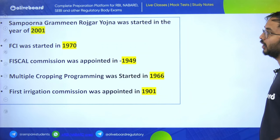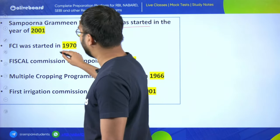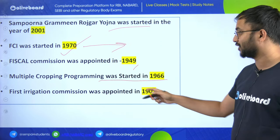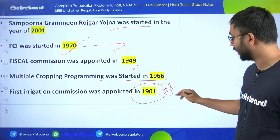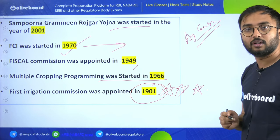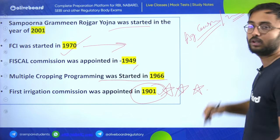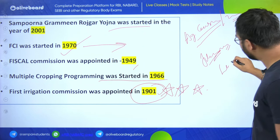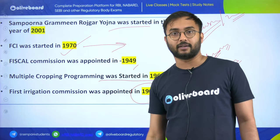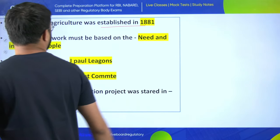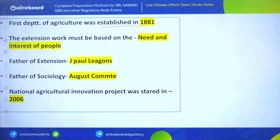Until Yojana was started on 2nd October 1977. Sampurna Grameen Rojgar Yojana was started in 2001. FCI was started in the 1970s. Food Commission was established in 1949. Multiple Cropping Program started in 1966. First Irrigation Commission was in 1901. The first Department of Agriculture was established in 1881. Father of extension is Jiv Paul Leagans - very important. Father of sociology is Auguste Comte.